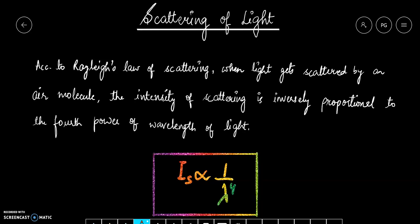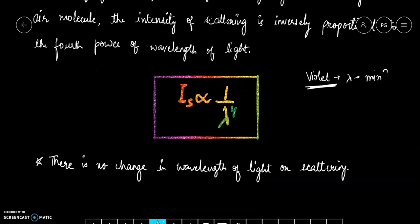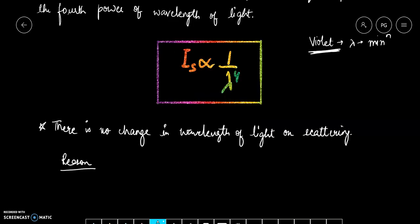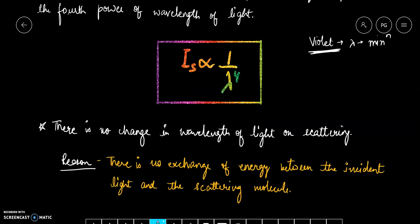Jitni zyadha wavelength hooghi light ki, utni hi wo kam scatter hooghi. Visible spectrum ki baat karin, to violet light ki wavelength minimum hooti hai, which means violet light scatters the most. But there's another important point: scatter होने पर light ki wavelength change नहीं होती. There is no change in the wavelength of light on scattering, and the reason for this is there is no exchange of energy between the incident light and the scattering molecule. The molecule is simply reflecting the light.